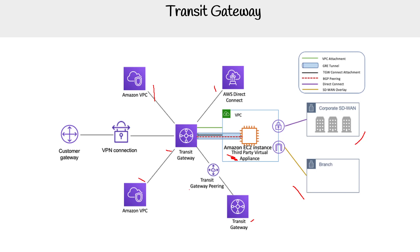The key point is that transit gateway is a lot more flexible than standard VPC peering. So you have VPCs, then VPC peering, then transit gateway, and then VPC Lattice which is more specialized. You can see there are a lot of cloud services that do similar things — you just have to choose what's going to work for you.